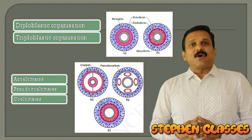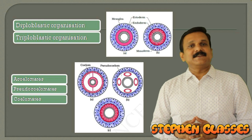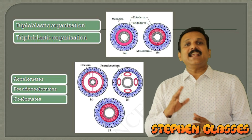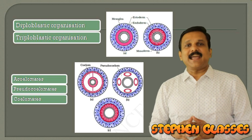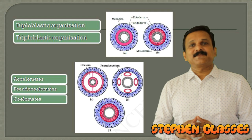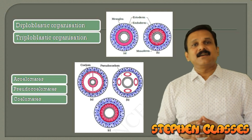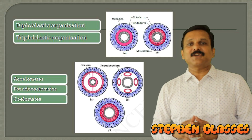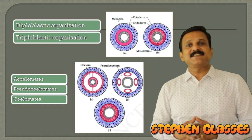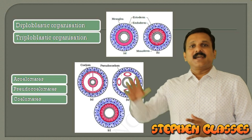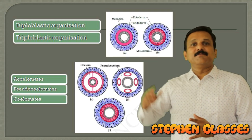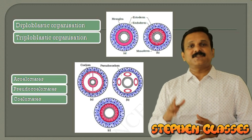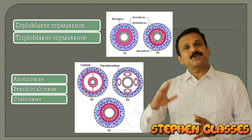In the first set, only two germ layers are present: the outer ectoderm and inner endoderm, and in between there is a jelly-like layer called mesoglia. Diploblastic animals are phylum Cnidaria and Ctenophora. Triploblastic organization means three germ layers are present — ectoderm, endoderm, and mesoderm — starting from phylum Platyhelminthes to Chordata.